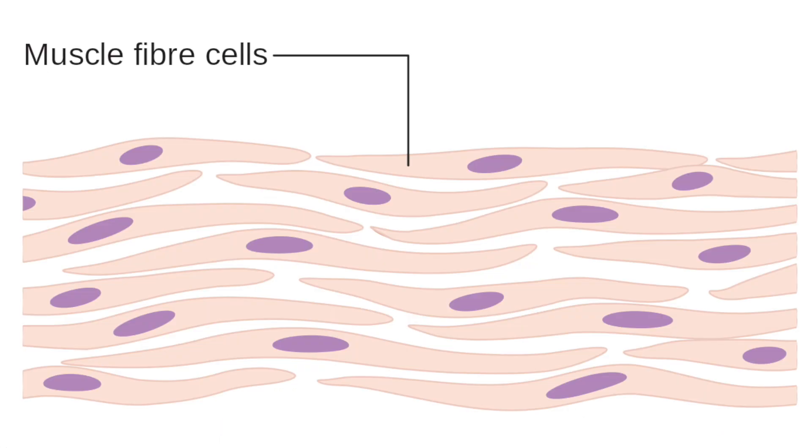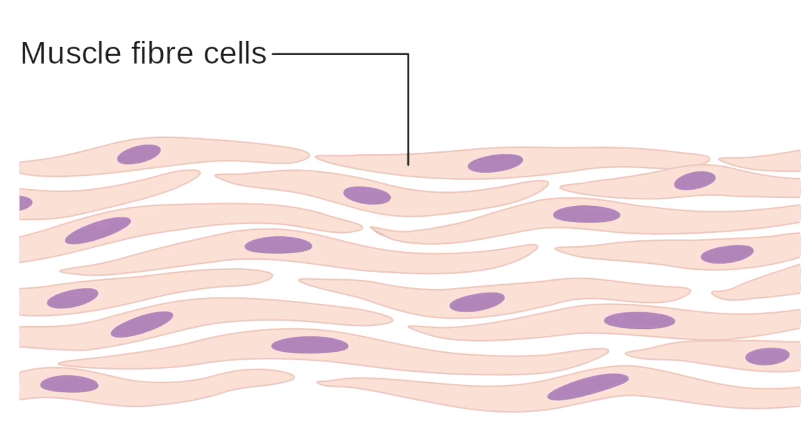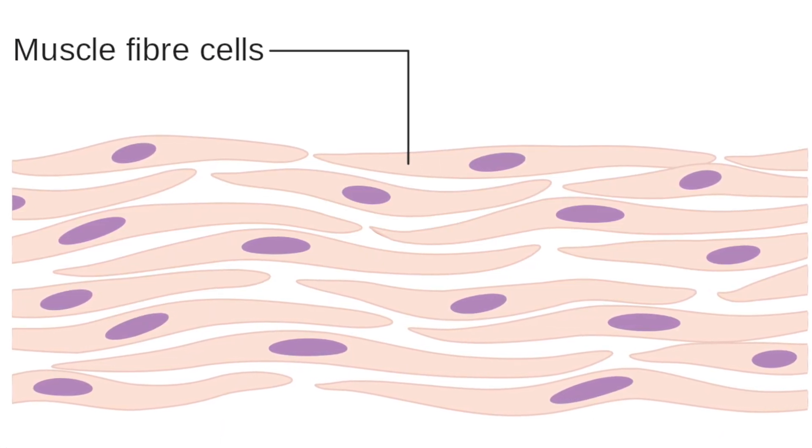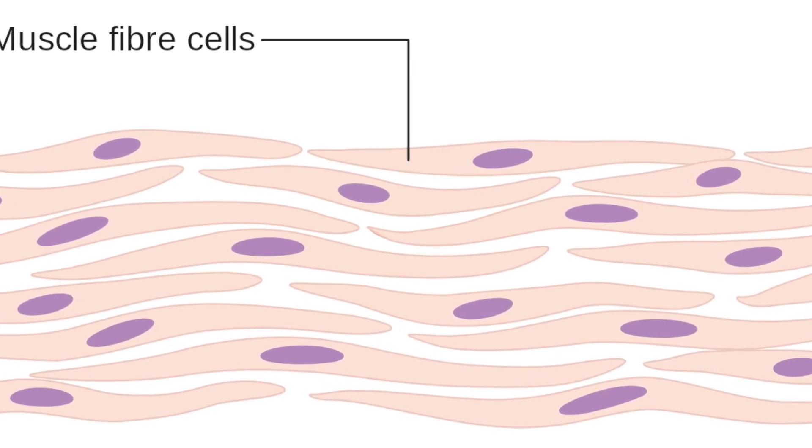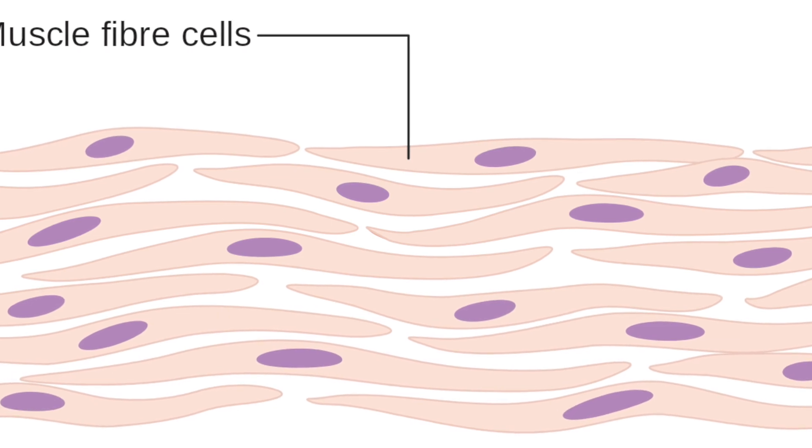Muscle cells are also specialized and this means that they have to have a number of different things. They contain special proteins that slide over each other which means that the fibers contract. They also need a lot of energy and this means they have two things.